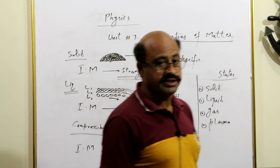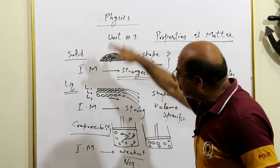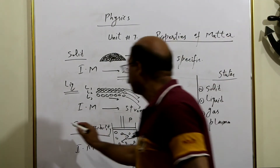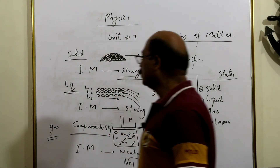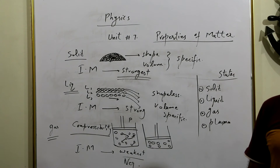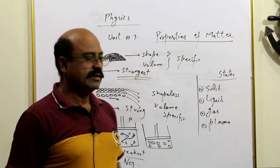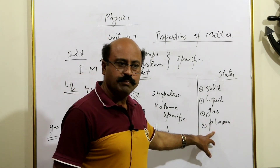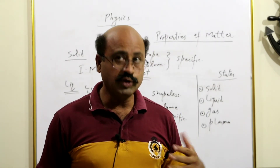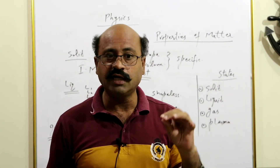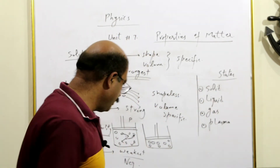Ab Haseeb se poochte hain — aap ne chapter 1 mein jo parha tha, kya sirf yeh 3 states hain — solid, liquid, aur gas? No. 4th kaun si hai? Plasma. Plasma ek bohat interesting qisam ka state of matter hai kyunke aam hamen nazar nahi aata. Lekin agar hum kainaat mein baat karein toh plasma is the most abundant state of matter in the universe.